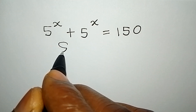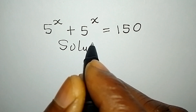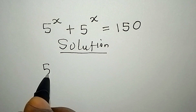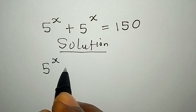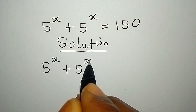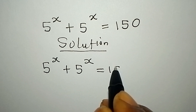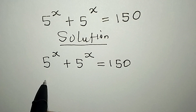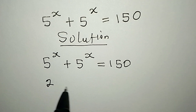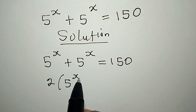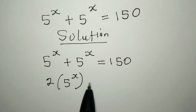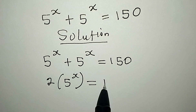Hello everyone. Let's provide a solution to this problem: 5 to the power of x plus 5 to the power of x equals 150. From here, we can put these two together so we have 2 times 5 to the power of x, since 5 to the power of x appears in two places, and this will be equal to 150.